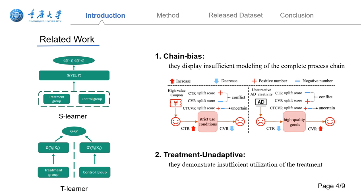Secondly, there's an underutilization of treatments. Common practices involve the use of attention mechanisms for treatment modeling, which, being vector-level interactions, lack the flexibility needed to capture feature fluctuations under various treatments.